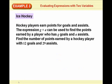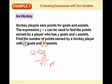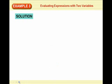So example number 3, evaluating expressions with 2 variables now. Hockey players earn points for goals and assists. The expression g plus a can be used to find the number of points earned by a player who has g goals and a assists. Find the number of points earned by a hockey player with 12 goals and 29 assists. So we put g, goals are g, so we put that in for g, 12, and we put 29 in for assists. So 12 plus 29, and I'm going to line them up there, 41 points. Here's their solution. They substituted. That's exactly what we did. And they added for 41 points.